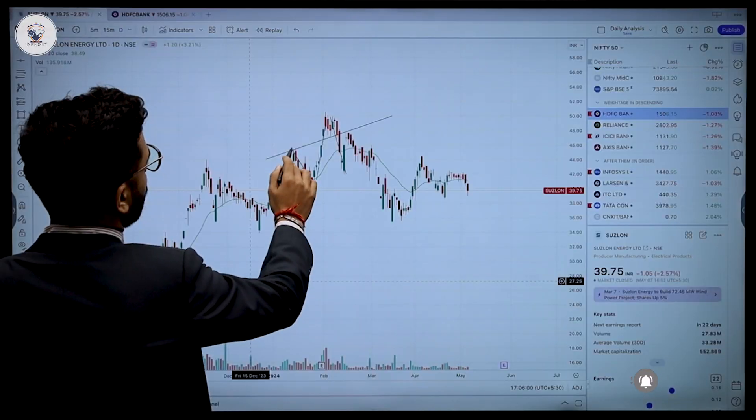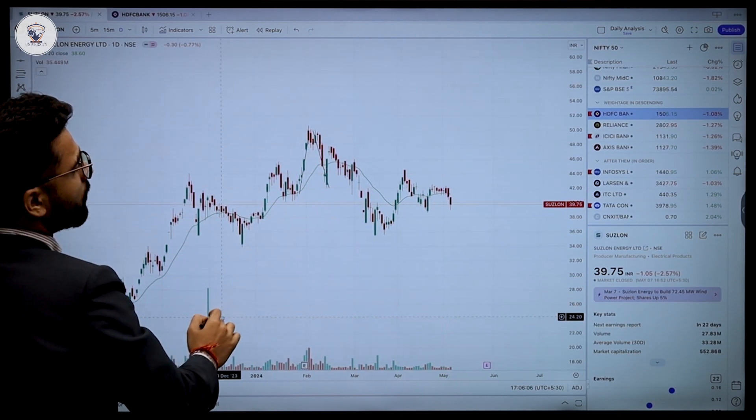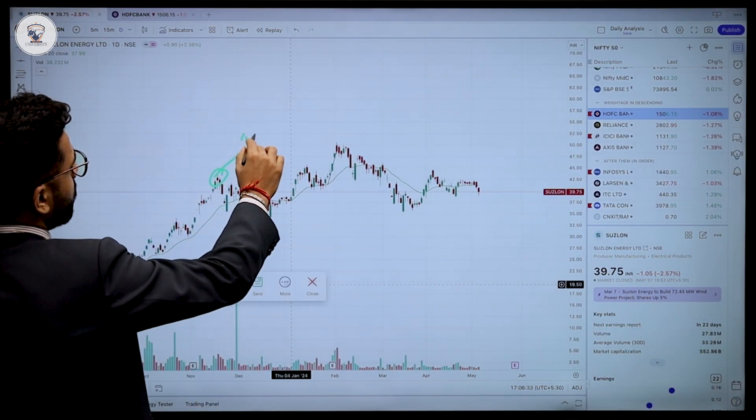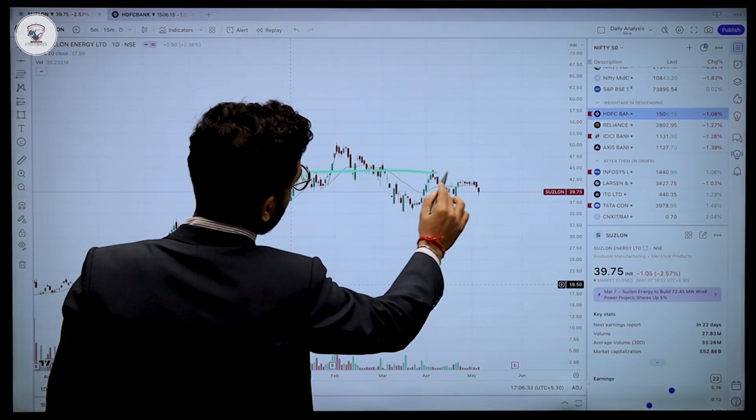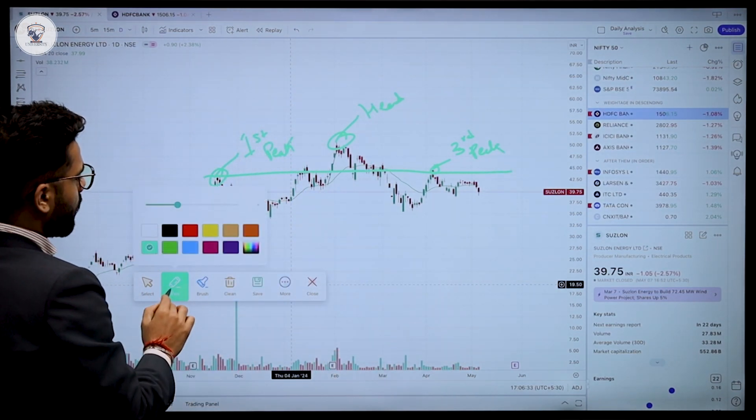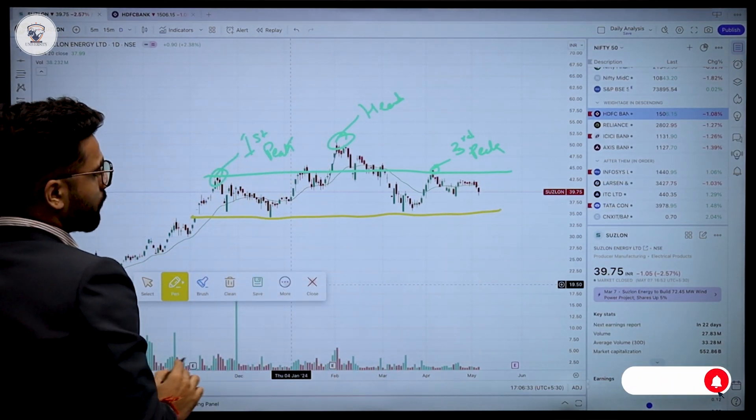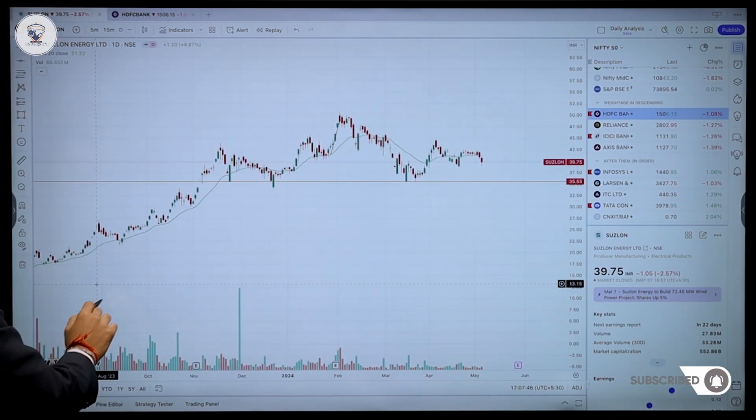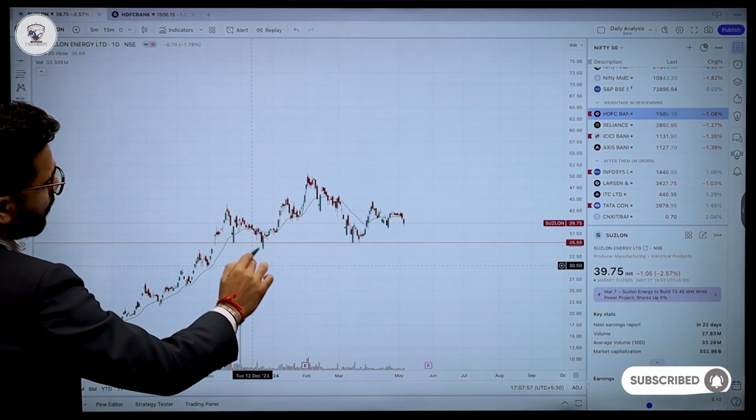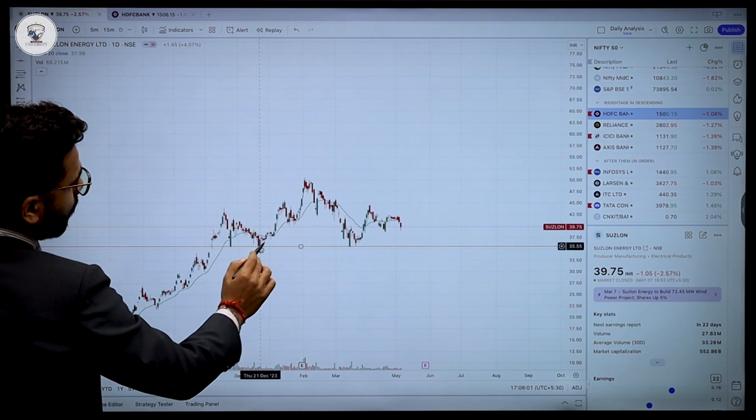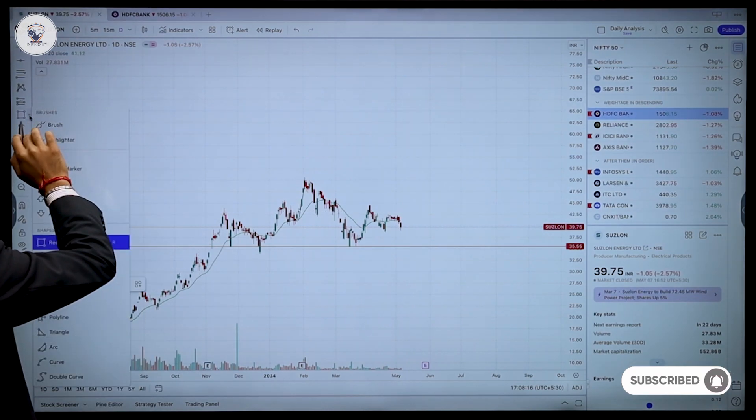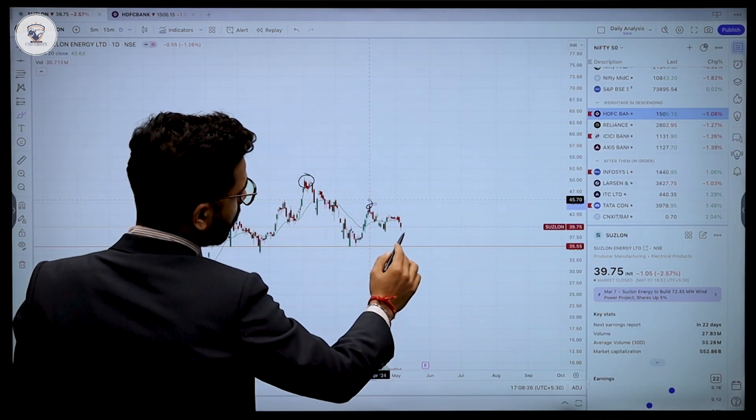So guys I have opened in daily time frame Suzlan Energy in the chart. I am showing a head and shoulders. I am showing the first peak, the left shoulder. Let's go on similar levels. This is your third peak, that is right shoulder, and this is your head. And the neckline, this is your head. Now initially we have to identify market in the initial uptrend. Suzlan Energy, this uptrend is going and then we have a retracement here.